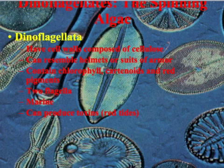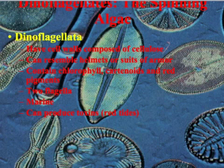One of the last unicellular types is dinoflagellates, or the spinning algae. These have cell walls composed of cellulose and can resemble helmets or suits of armor. They contain chlorophyll, carotenoids, and red pigments, and have two flagella — again, you might not see these flagella, but you can usually tell by the way they move. They are marine organisms and can produce toxins, causing red tides. These are actually the organisms responsible for red tides.